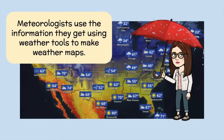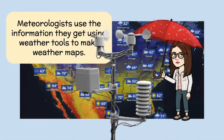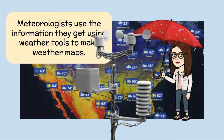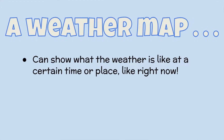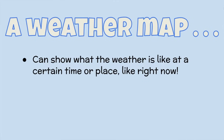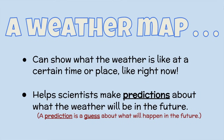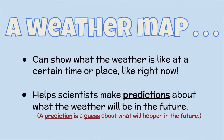Meteorologists use the information they get using weather tools to make weather maps. Those tools include an anemometer, a thermometer, and a barometer. A weather map can show what the weather is like at a certain time or place, like right now. It helps scientists make predictions about what the weather will be in the future. A prediction is a guess about what will happen.